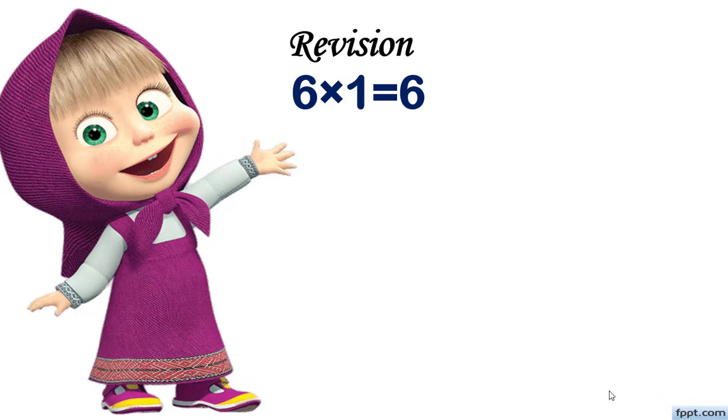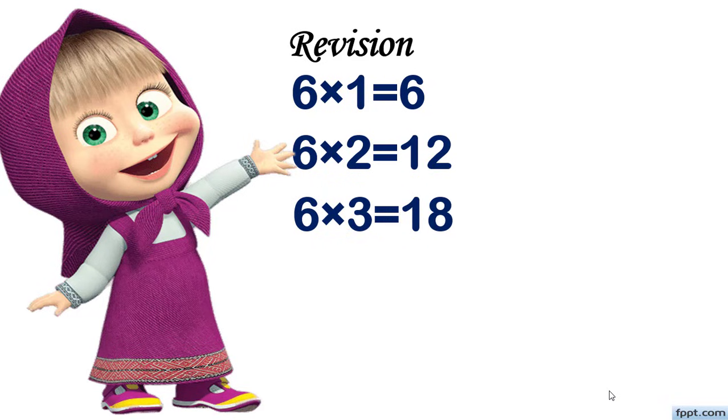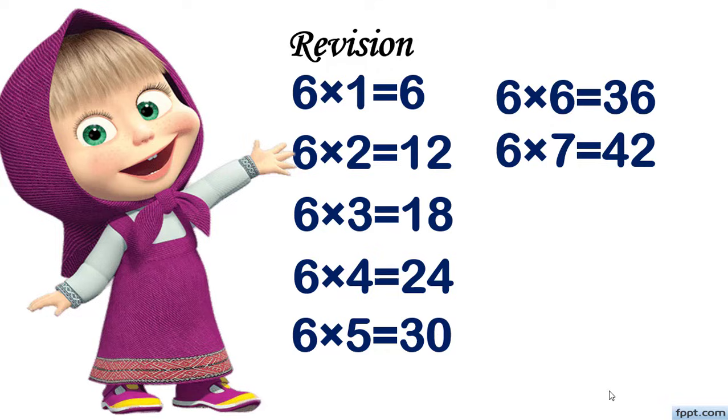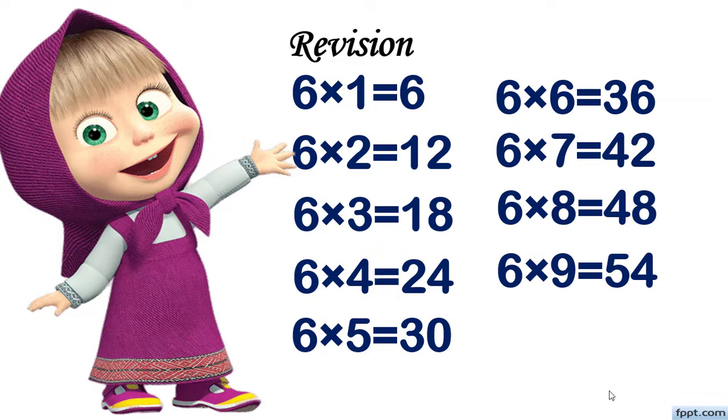6 ones are 6, 6 twos are 12, 6 threes are 18, 6 fours are 24, 6 fives are 30, 6 sixes are 36, 6 sevens are 42, 6 eights are 48, 6 nines are 54, 6 tens are 60.